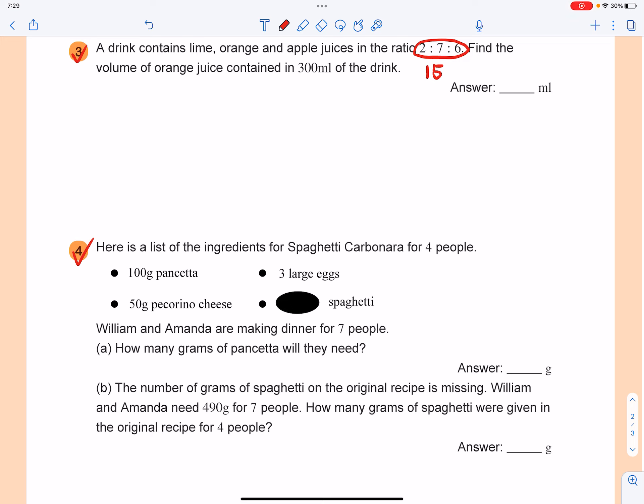And as for the orange, that will be 7 out of 15. So the answer will be 300ml times by 7 over 15. So let's see what we have.